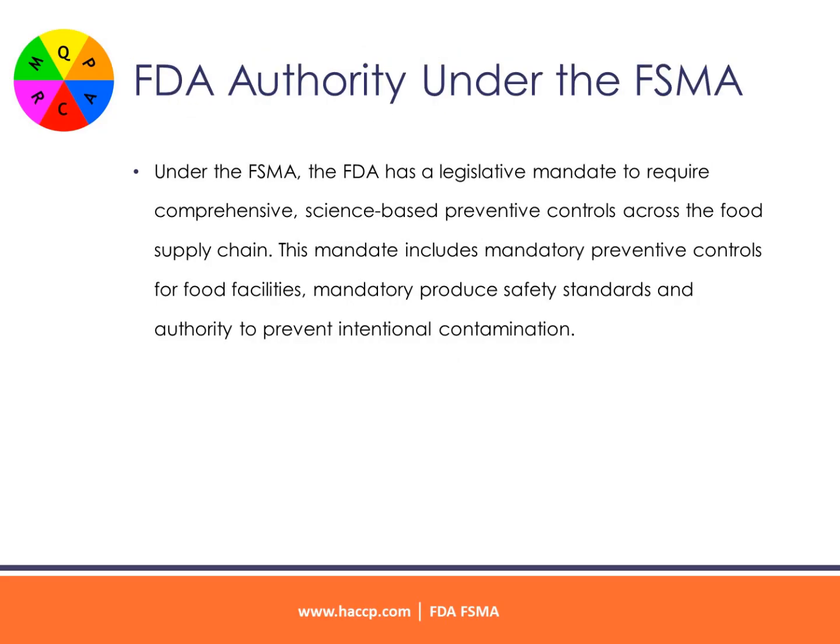FDA Authority Under the FSMA: Under the FSMA, the FDA has a legislative mandate to require comprehensive, science-based preventive controls across the food supply chain. This mandate includes mandatory preventive controls for food facilities, mandatory produce safety standards, and authority to prevent intentional contamination.